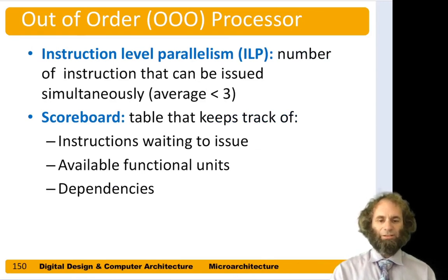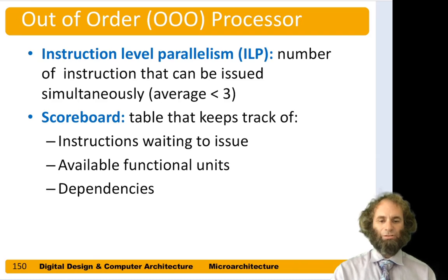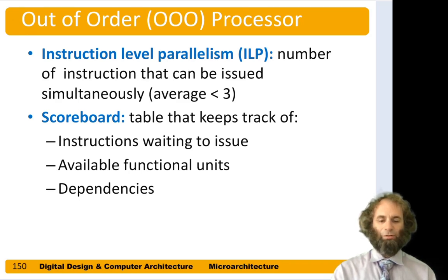With an out-of-order processor and a lot of hardware, we could theoretically issue many instructions at a time. However, in real programs there are many dependencies, and even with infinite hardware it's often not practical to issue more than three instructions per cycle. Out-of-order processors are typically built with a device called a scoreboard that tracks instructions waiting to issue, available functional units, and dependencies between instructions, then finds the next instructions ready to issue with all dependencies satisfied.